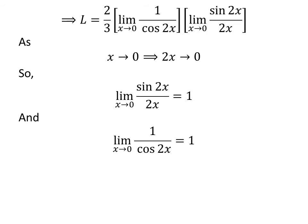As x approaches 0, so 2 times x approaches 0. This implies limit of sine of 2 times x upon 2 times x as x approaches 0 is equal to 1. And limit of 1 upon cosine of 2 times x as x approaches 0 is equal to 1.